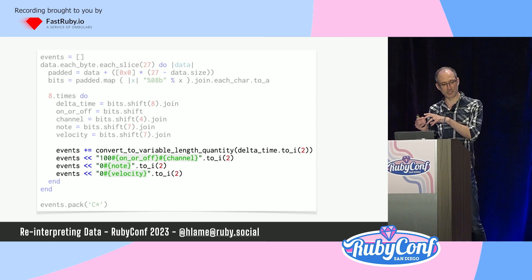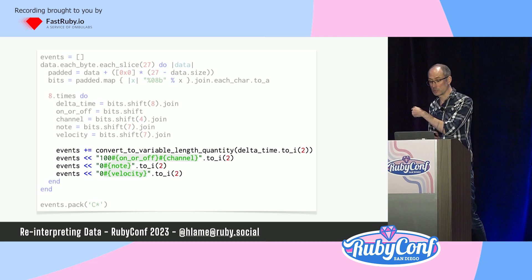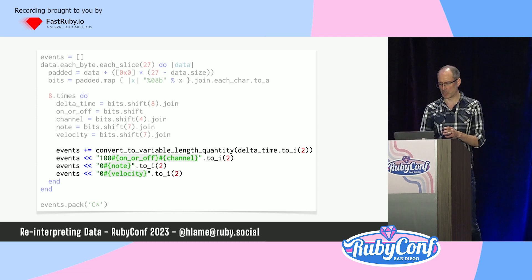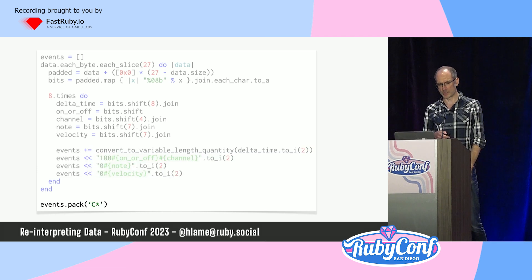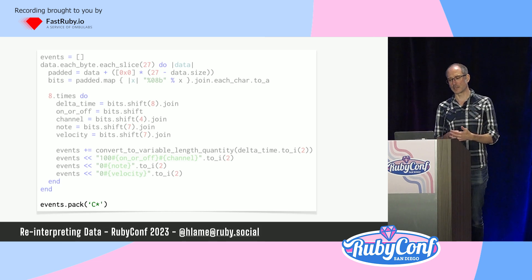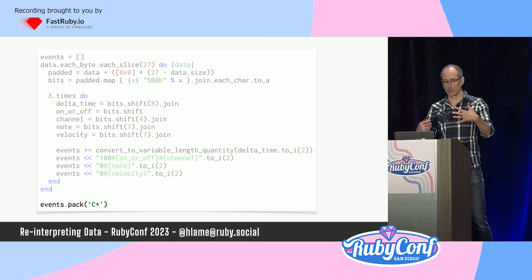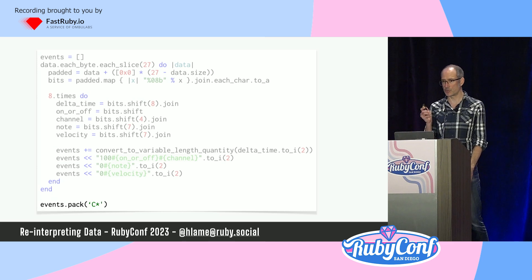Then we turn all those bits into the valid bytes we need — VLQ encoding for the time, and the static 1s and 0s at the front of the event type and data bytes. The `to_i(2)` is the inverse of `to_s(2)`: it takes a string, interprets it as a binary number, and turns it into a real number. We put all of these numbers into an array and use `pack` — didn't I say we were done with that? — to pack the whole array as one-byte character data and write that to our file. So now we have unsophisticated but valid MIDI data generated from arbitrary file data.